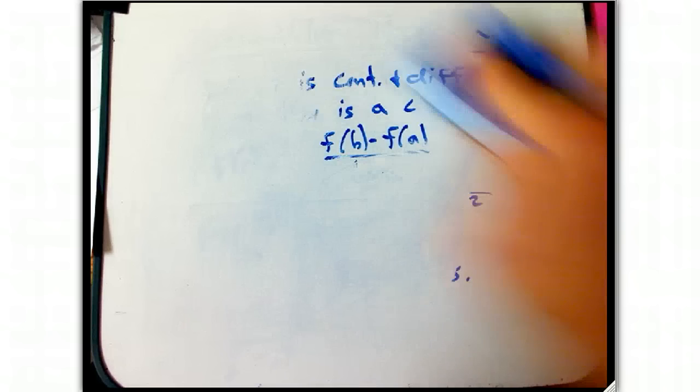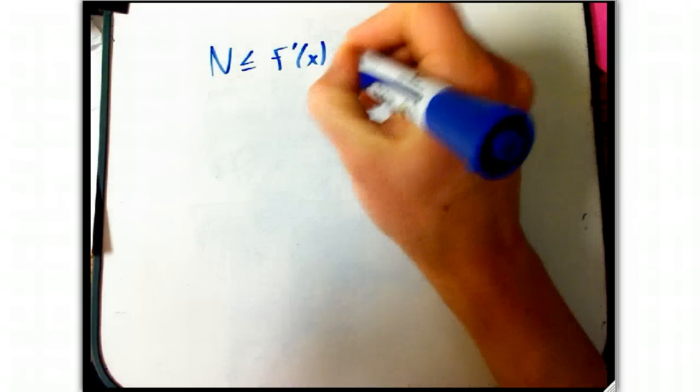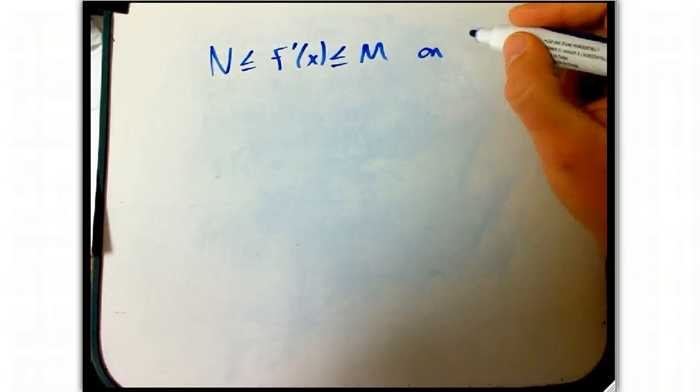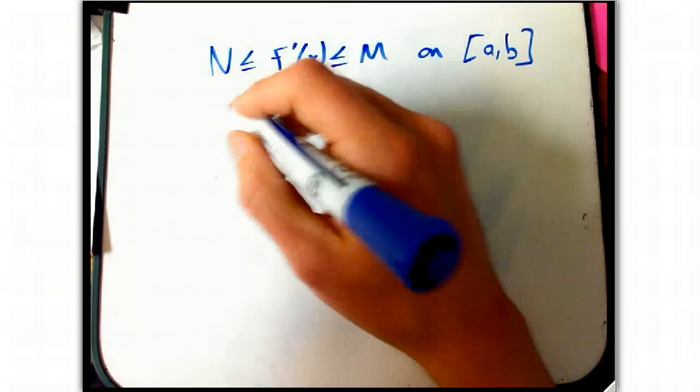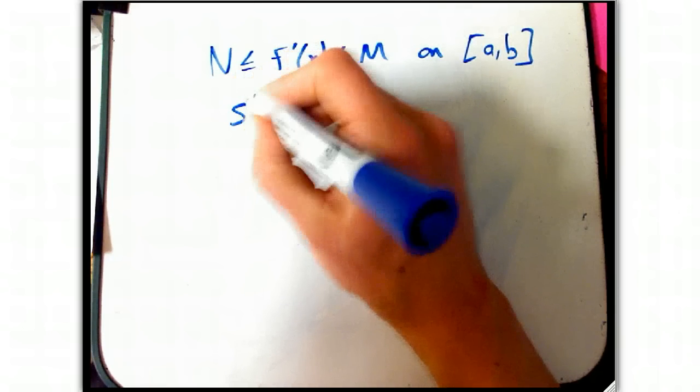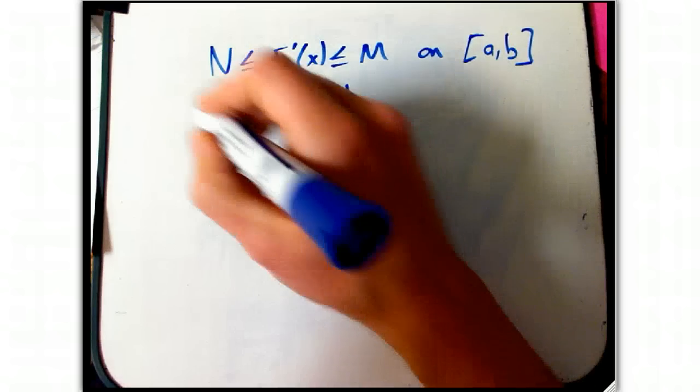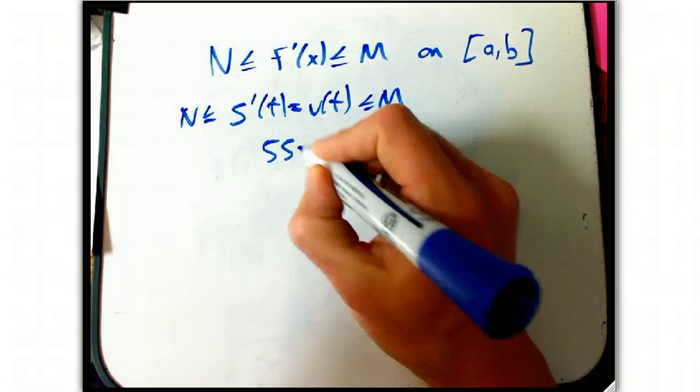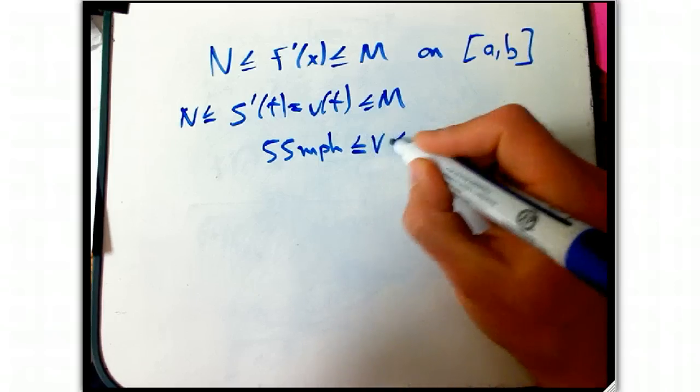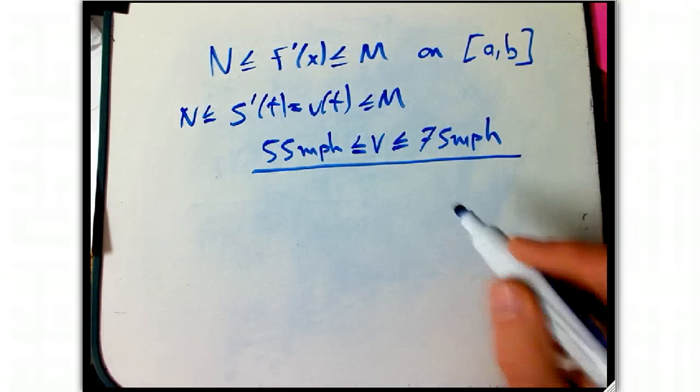So if I rewrite that assumption, let's say n is less than or equal to f prime of x, less than or equal to m, on some interval. That could be everywhere, it could just be on some interval. So, for example, if I have s prime of t, that's the velocity, instead of some random function f of x. Suppose that's like between 55 miles per hour and 75 miles per hour.